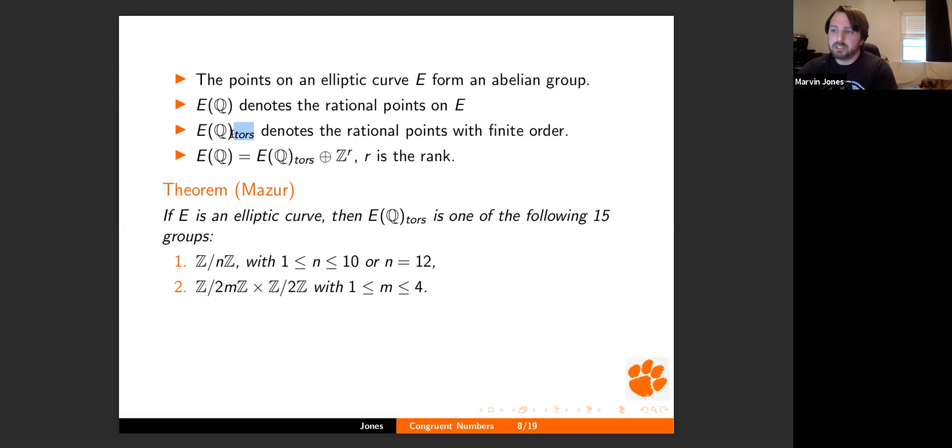And if I want to talk about the rational points that have finite order, then we denote as tors for the torsion subgroup. Okay. And we can decompose the rational points group into this finite subgroup and the infinite part. So depending on how much algebra you've seen, that's either completely obvious or not. So, but that's fairly standard.